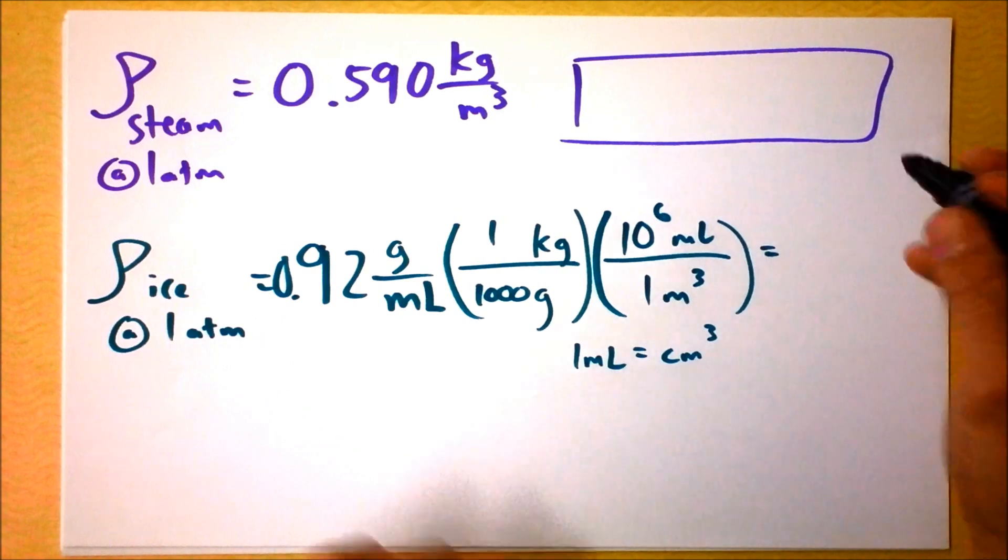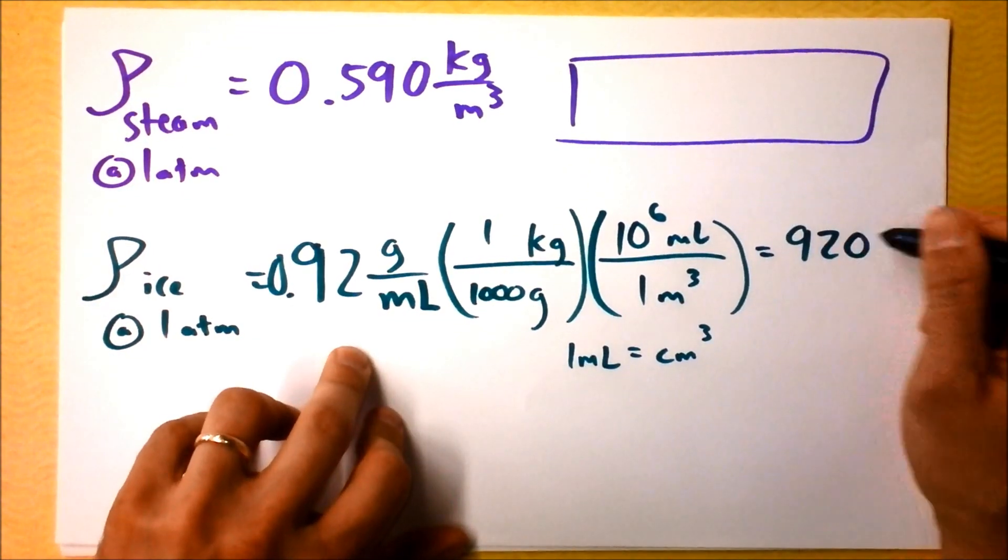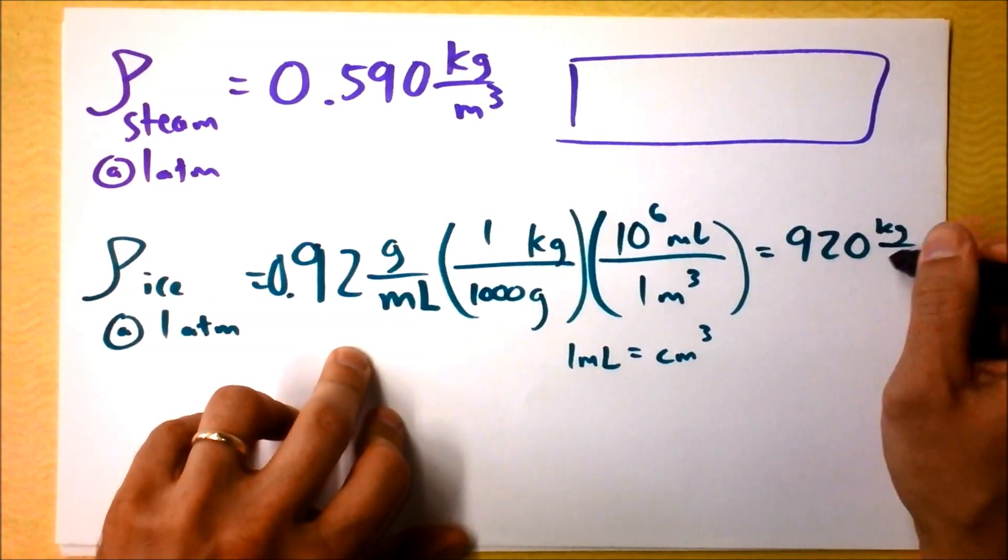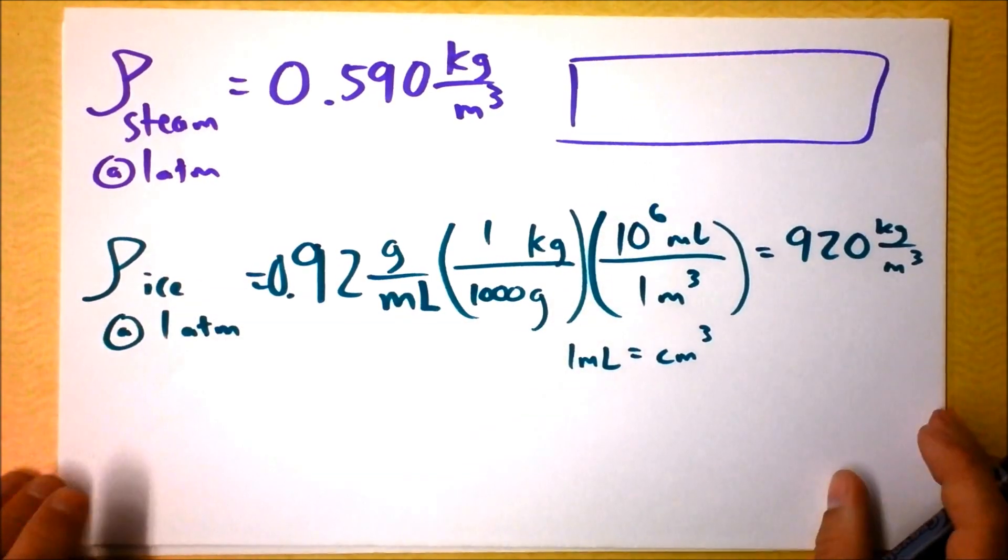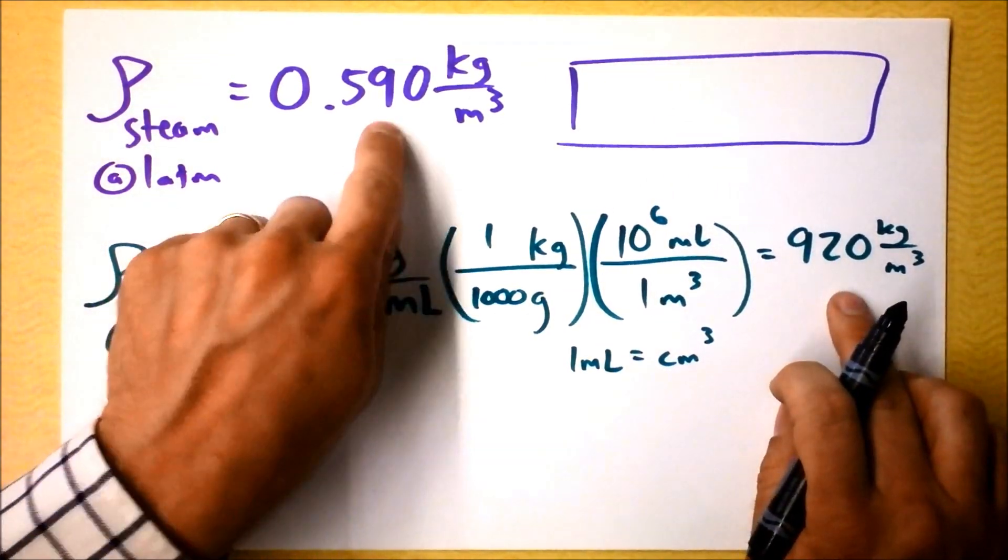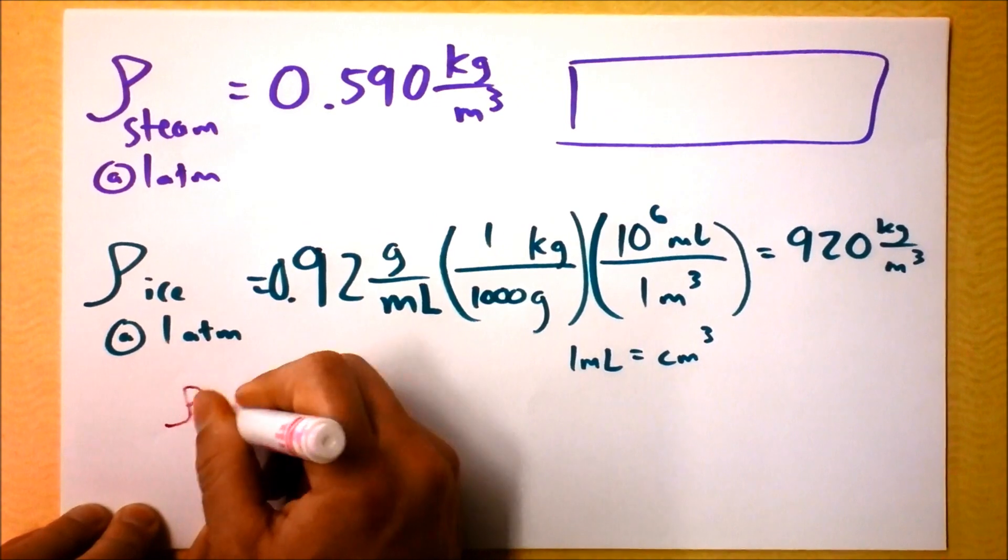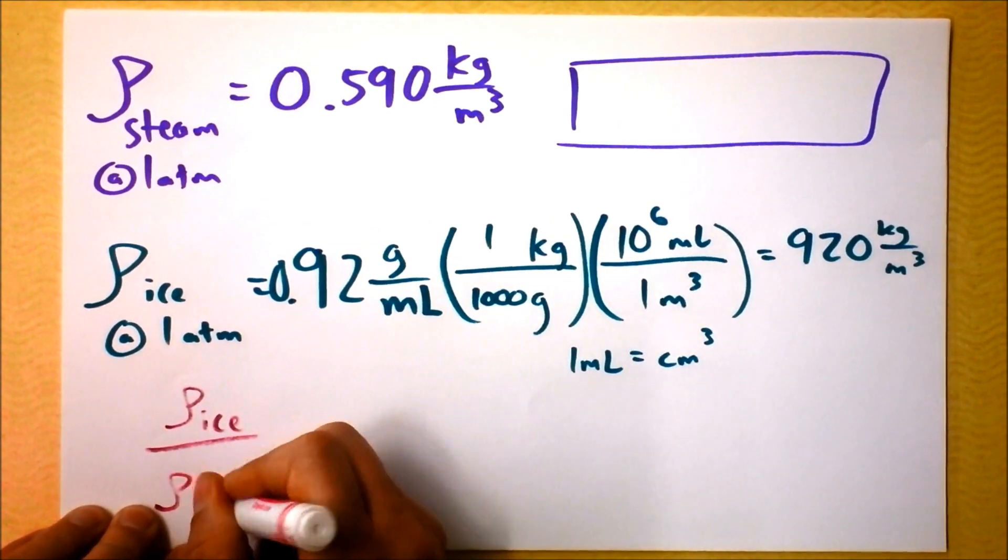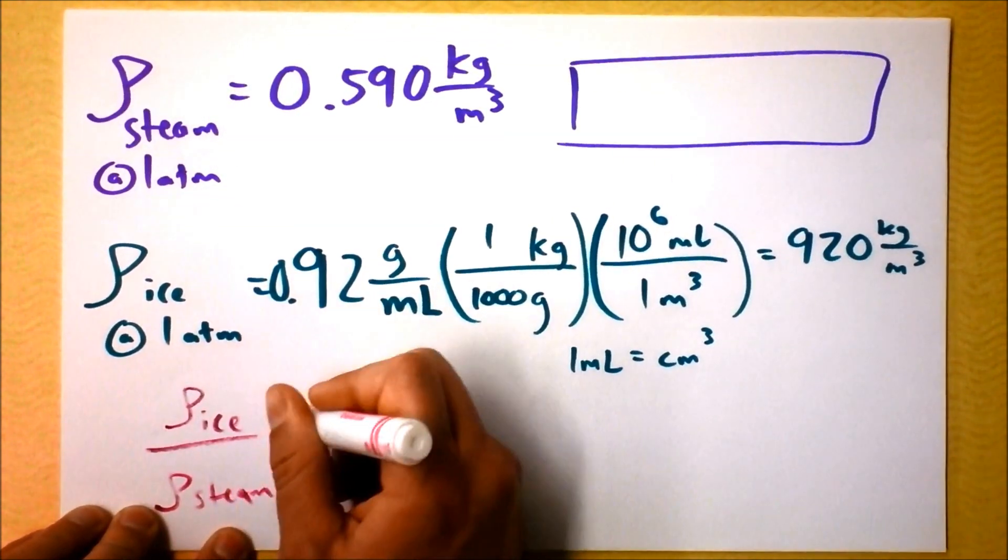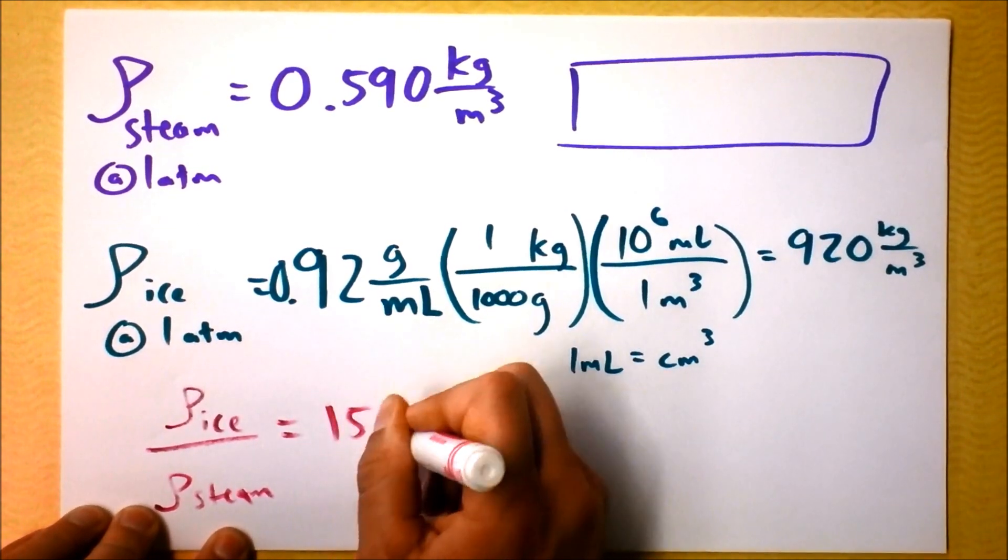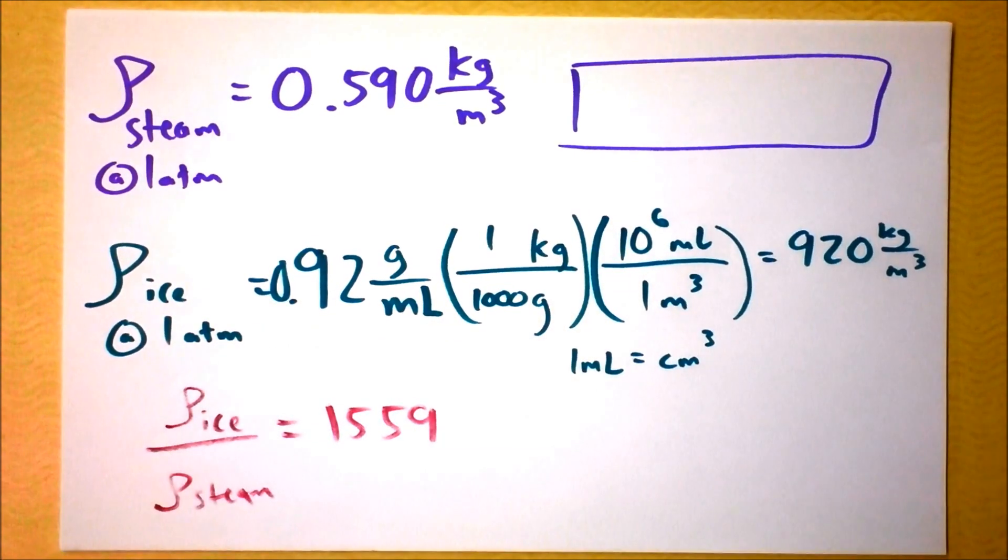So if I do all that math, this is just going to be 920 kilograms per cubic meter. And what I thought was interesting was the ratio of those densities. So the ratio of the density of ice over the density of steam. This is our operative ratio right here, 1,559.